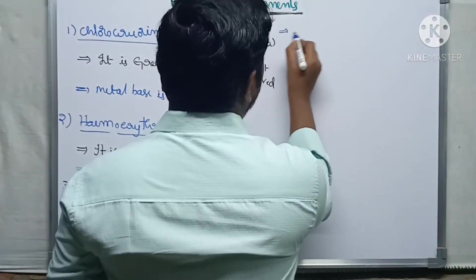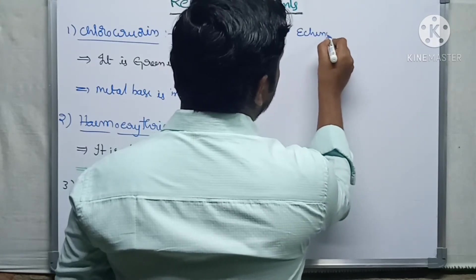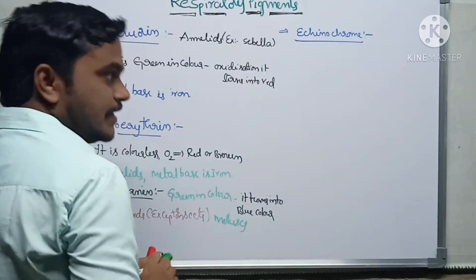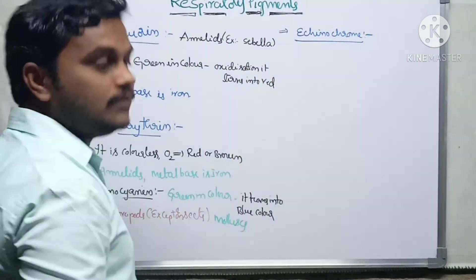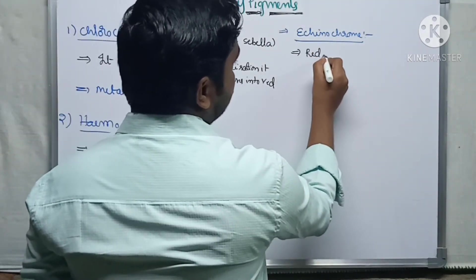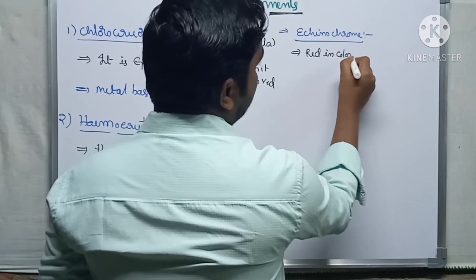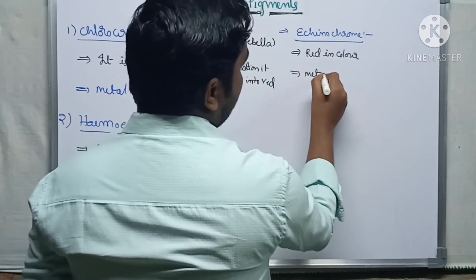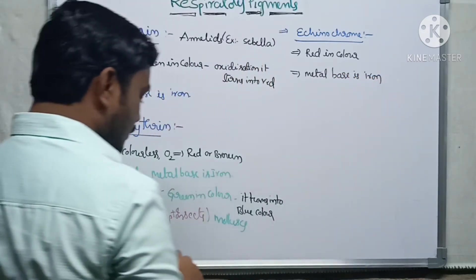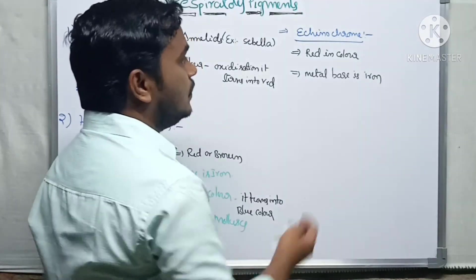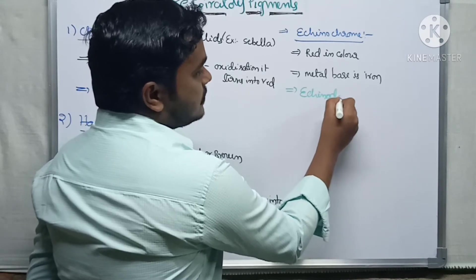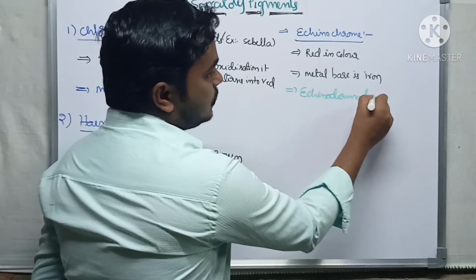One more respiratory pigment is echinochrome. The name itself suggests the example — it is found in echinodermates. This pigment is also red in color, and the metal base is iron. So red color and iron metal base — echinochrome is present in echinodermates.